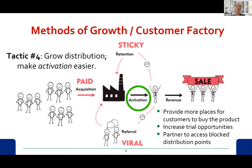Tactic four is growing distribution, or making activation easier. Certainly with a service, you're not necessarily looking at growing a distribution channel — you may be looking at making activation easier. That happens in the activation section. They've already become aware of our value proposition, and now we want to make it easier for them — make activation easier so that we can acquire their revenue and they become happy customers.